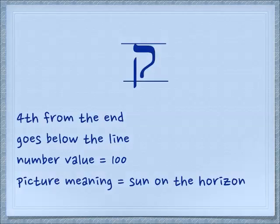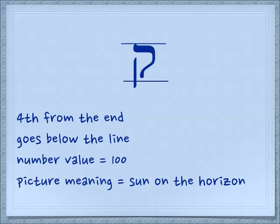The first letter we're going to learn today is the kuf. It's the fourth letter from the end, and it is different in that it goes below the line. The number value for it is 100. The picture meaning is the sun on the horizon. The sound is kuh.